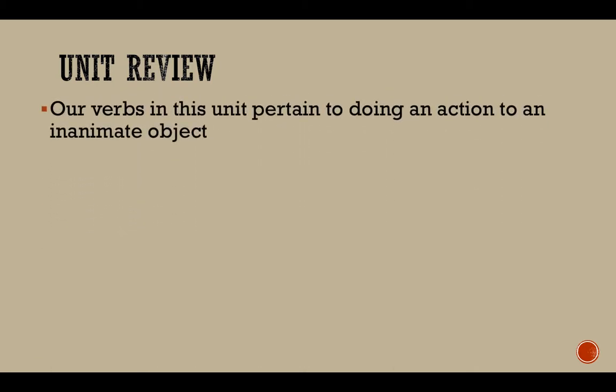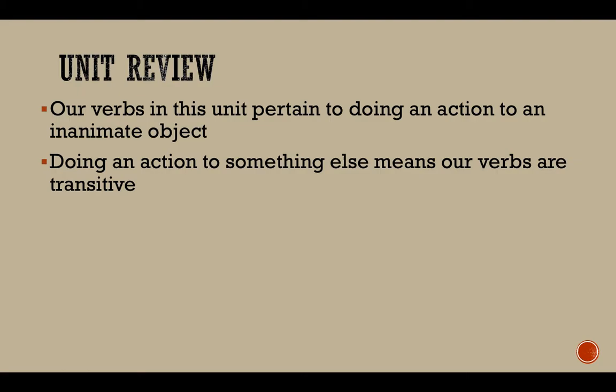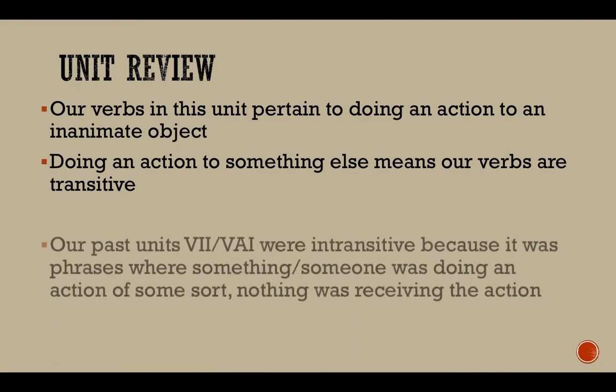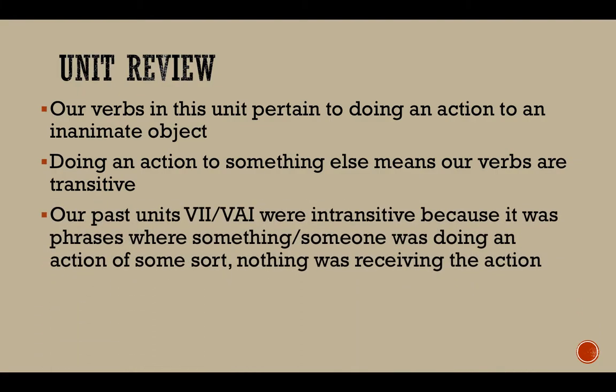Unit review. Our verbs in this unit pertain to doing an action to an inanimate object — that makes it transitive. Doing an action to something else means our verbs are transitive. Our past units, VI and VAI, were intransitive because it was phrases where something or someone was doing an action of some sort, with nothing receiving those actions.